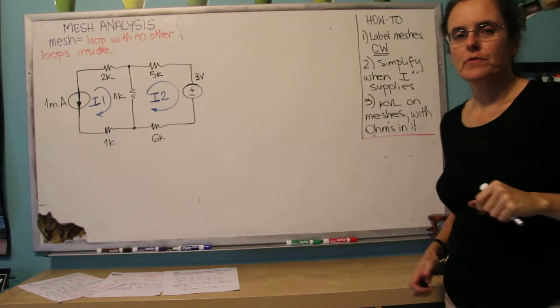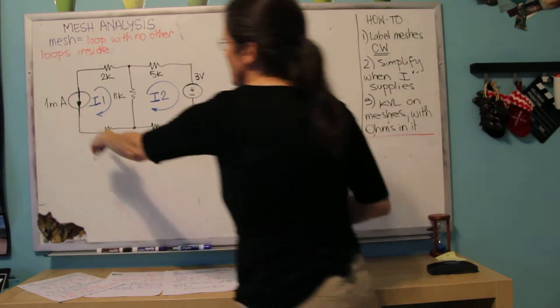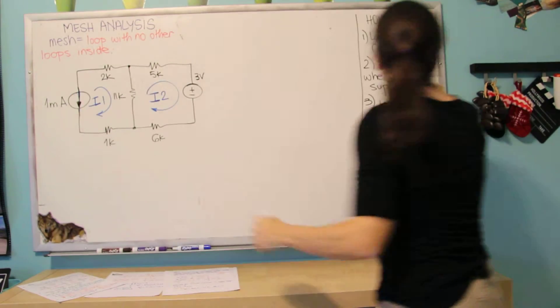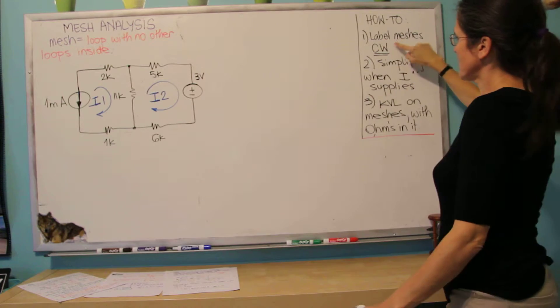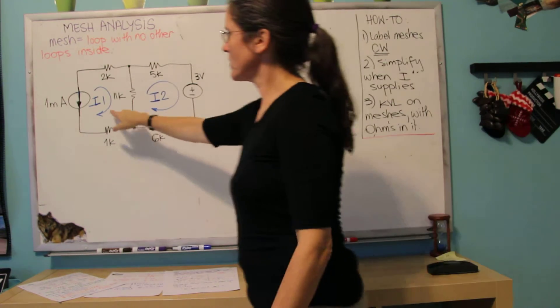So now I'll show you how to simplify it in case you have current supplies. So this step 2 here, I showed you, I did not show you yet, but we still do the same thing, we label the meshes clockwise.